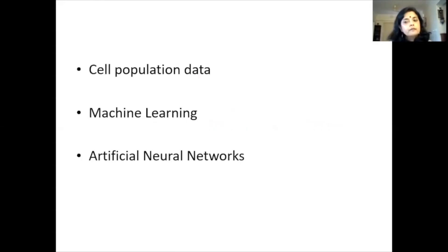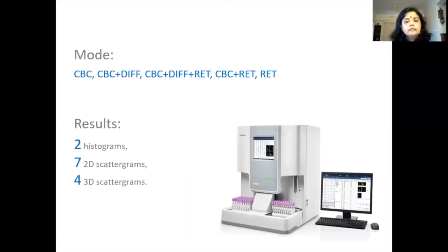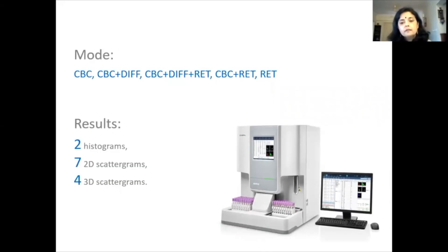When we talk of cytomorphometry, we have moved to more fine-tuned terminologies like cell population data analysis, machine learning algorithms, and artificial neural networks — all part of cytomorphometry helping us analyze cells and break them into functions. Looking at one system as an example, it has various modes: CBC, CBC plus DIF, CBC plus DIF plus RETIC, CBC plus RETIC, or RETIC only. The results generated include histograms and scattergrams: two histograms, seven 2D scattergrams, and four 3D scattergrams — the 3D being the hallmark of this machine.